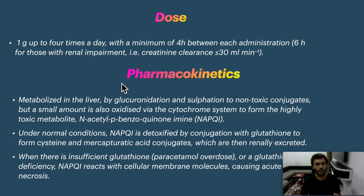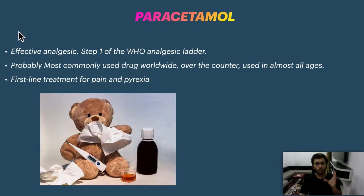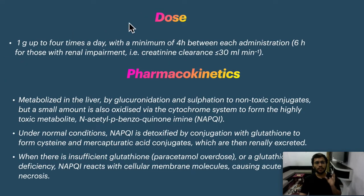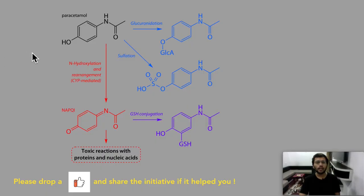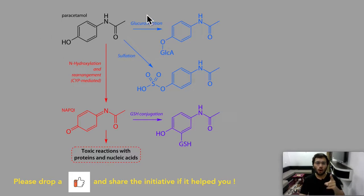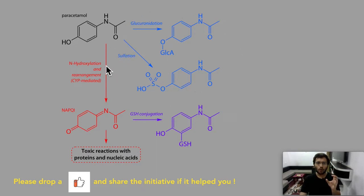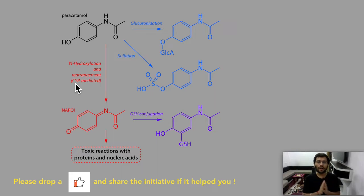Now for pharmacokinetics: paracetamol is metabolized mainly by two pathways — glucuronidation and sulfation. A small amount also undergoes CYP-mediated metabolism, for example via CYP2D6. This produces a toxic metabolite called NAPQI.